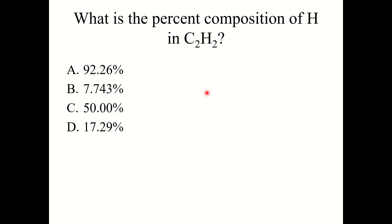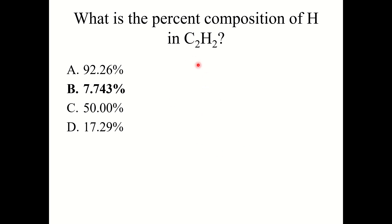Quick knowledge check: What is the percent composition of hydrogen in ethane, C2H2? The correct answer is 7.743%. You would have the mass of hydrogen on top — 2 × 1.008 = 2.016 — and the total mass of the compound on the bottom, which is the mass of hydrogen (2.016) plus the mass of carbon (2 × 12.011). That gives you 7.743%.